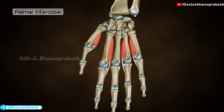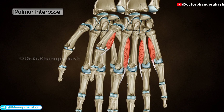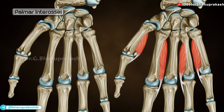Palmar interossei. There are a total of four palmar interossei. From lateral to medial, they are numbered 1, 2, 3, and 4. All four palmar interossei are unipennate.